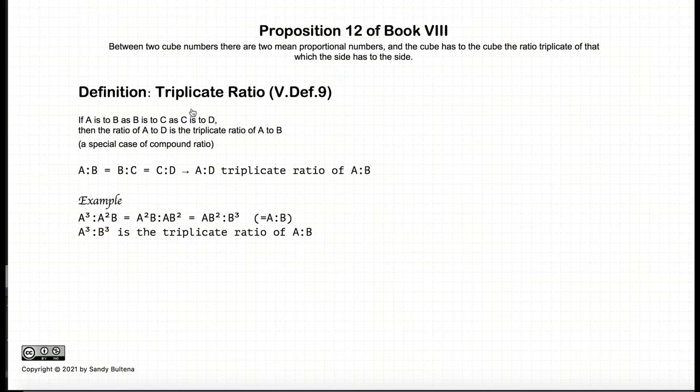The other definition we need to address is the triplicate ratio, definition 9 of Book 5. So if we have a series of ratios that are all equal, such that a is to b is equal to b is to c is equal to c is to d, then by definition a to d is the triplicate ratio of a to b.